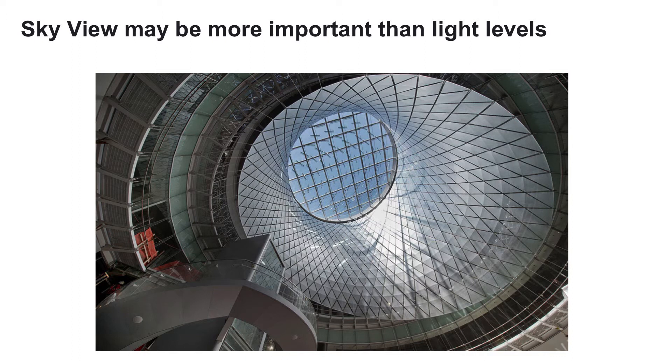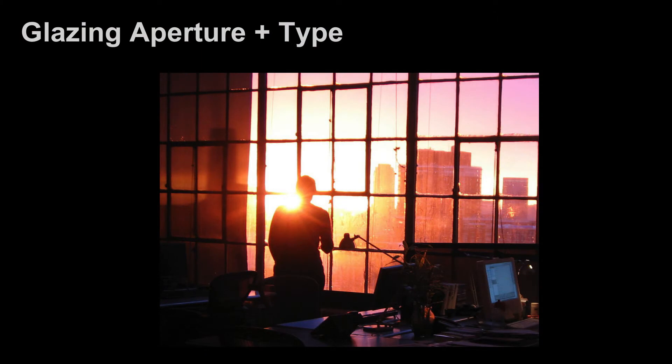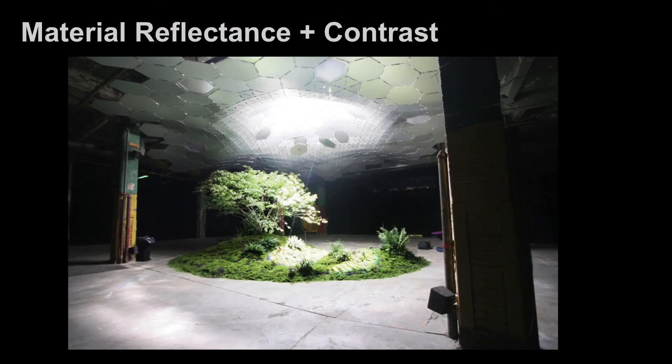Sky view may be much more important than light levels. Another project I worked on brings daylight five stories underground — Fulton Street Transit Center, which you can visit. The space is incredibly obstructed from the sun, but the way it's designed and the way the light is distributed connects everyone to the fact that there is sky and sun. You have this beautiful dome in connection to the natural world. Glazing aperture and type is the next piece, and there are a number of rules of thumb there — all things we have a lot of control over, but none clearly defined in code. And then material reflectance and contrast: this is a small example of what can be done with good design and a very small amount of light to create a space that feels dynamic, vibrant, and sustains life and growth beyond just humans.